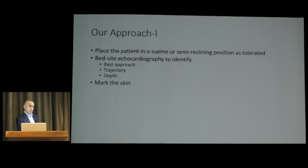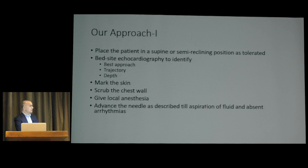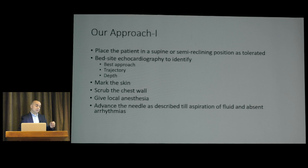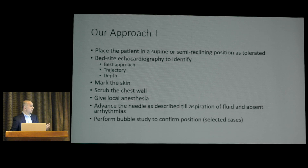Mark the skin at the chosen entry point, prep the chest wall, and give local anesthesia. Advance the needle over the superior edge of the rib for parasternal or apical approach, or at 30 degrees for sub-xiphoid, until you aspirate fluid in the absence of arrhythmias. If you aspirate non-bloody fluid, you can aspirate freely and confirm reduction by echo. If the fluid is bloody — as is most common with procedural complications — you must perform a bubble study to confirm position in the pericardial space and not the RV or RA.